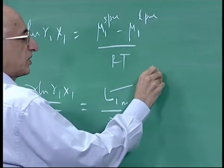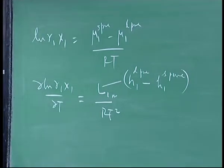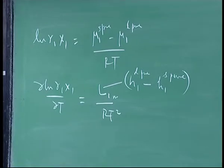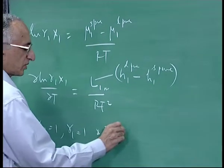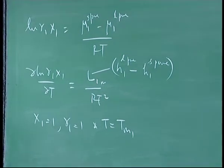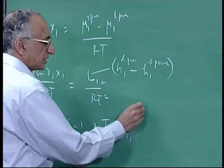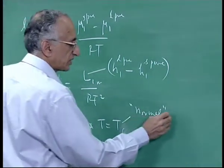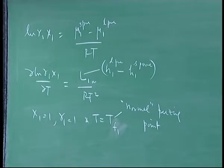So I am really looking at T. So I take this and differentiate this with respect to T. I will get H1 liquid pure minus H1 solid, because there will be a change in sign. This will be the latent heat of melting of 1 by RT square. This is H1 liquid pure minus H1 solid pure.